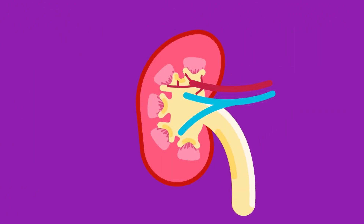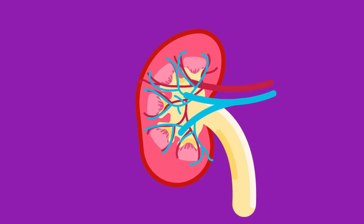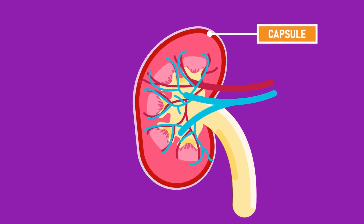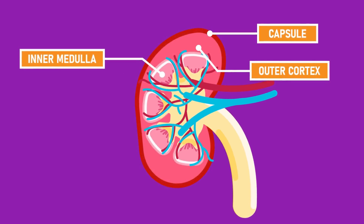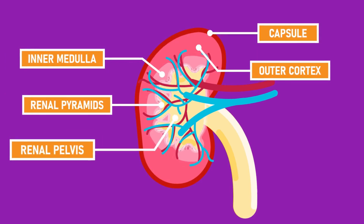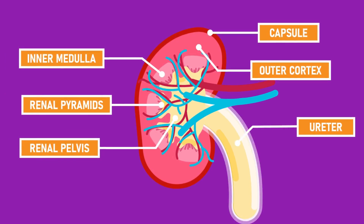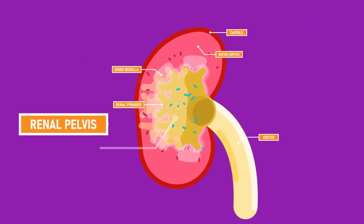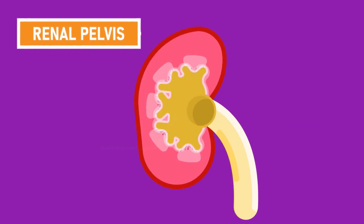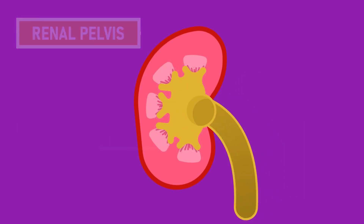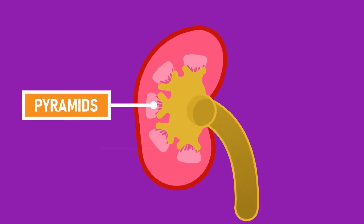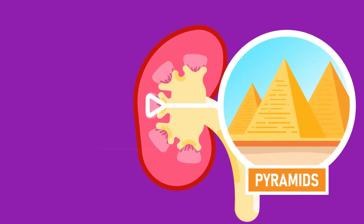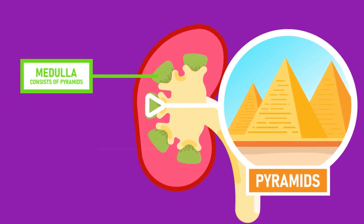The artery supplies the kidney with blood and the vein carries it out. The structures of a kidney include a capsule, outer cortex, inner medulla, renal pyramids, renal pelvis, and the ureter. At the top of the ureter we find a cavity called the pelvis, which collects urine and opens to an area called pyramids. The pyramids are cone-shaped areas in the medulla region of the kidney.